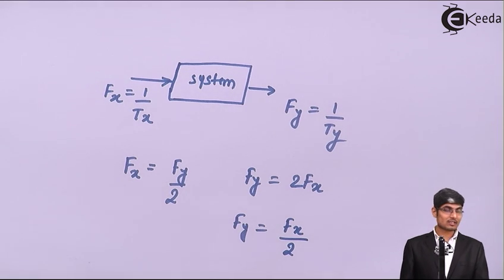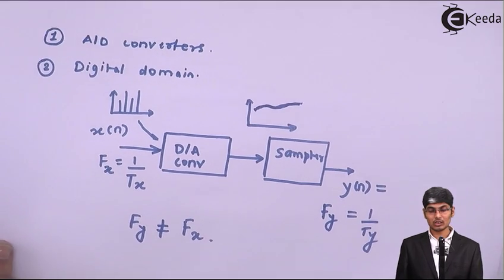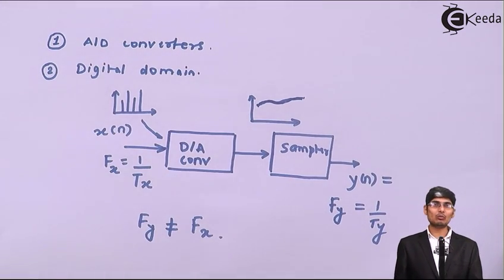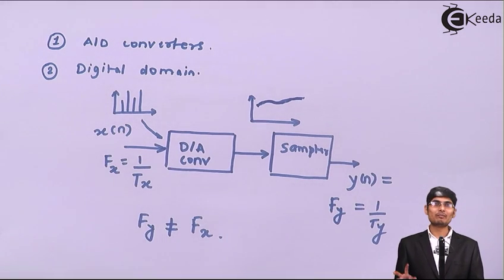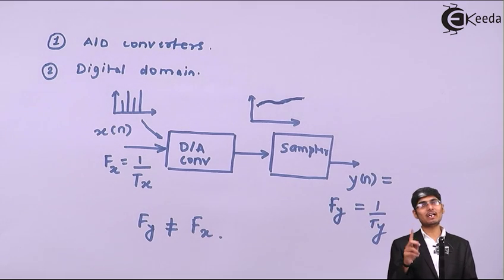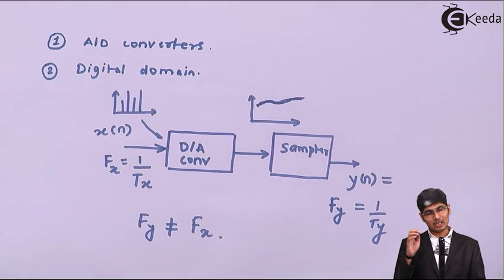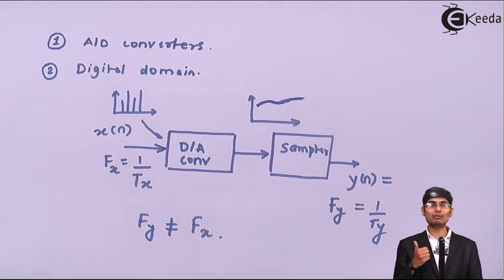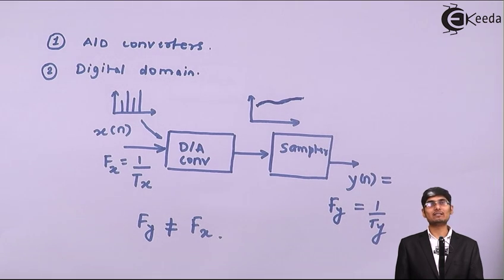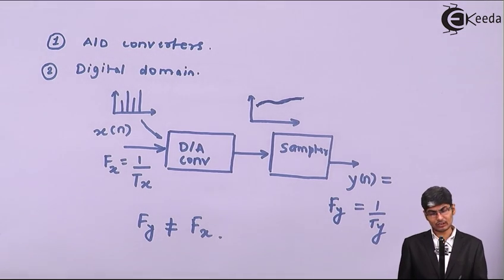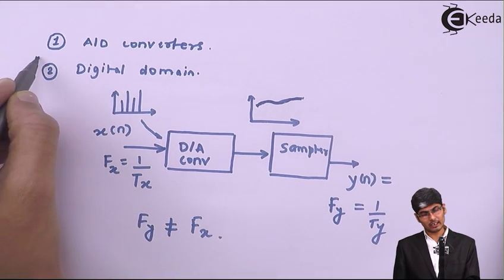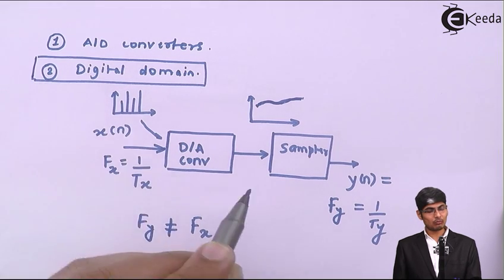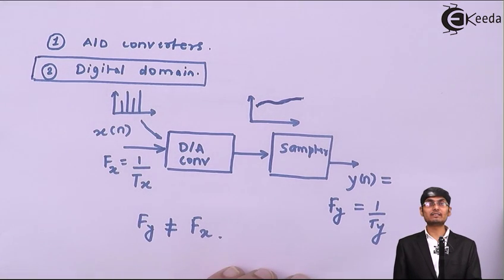So we can implement multi-rate signal processing using two methods: one using D-to-A converters, and the second using the digital domain. In the digital domain, fx and fy will be in relation, whereas with D-to-A converters, fx and fy are arbitrarily selected. D-to-A converters suffer from loss of information, but the digital domain does not. We will be focusing on the second method, as we are dealing with discrete-time signals.